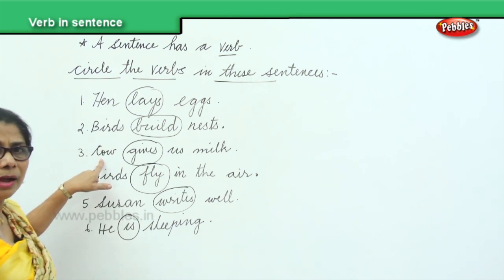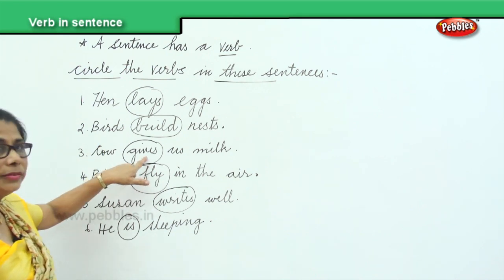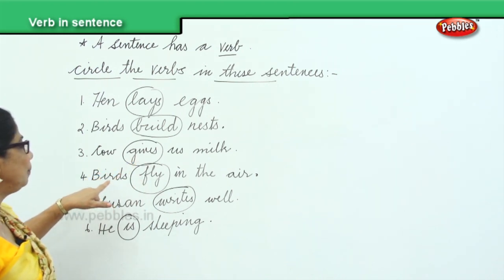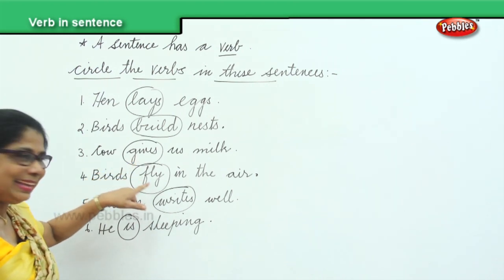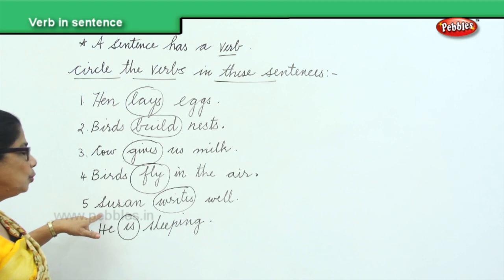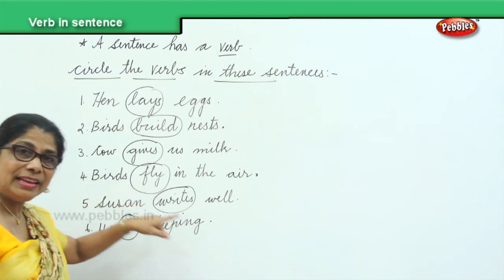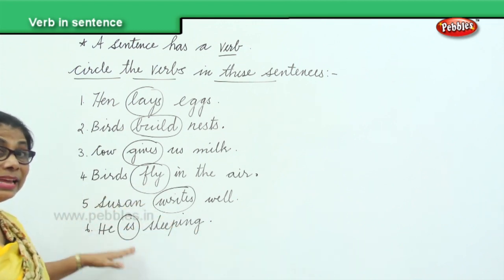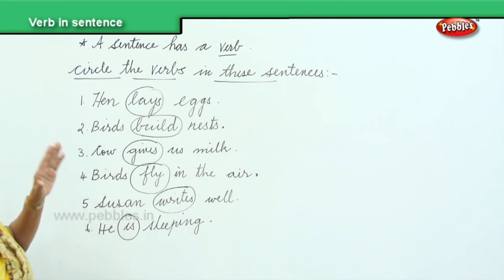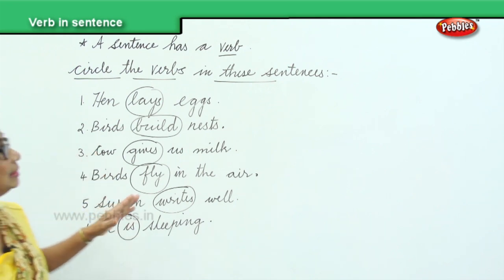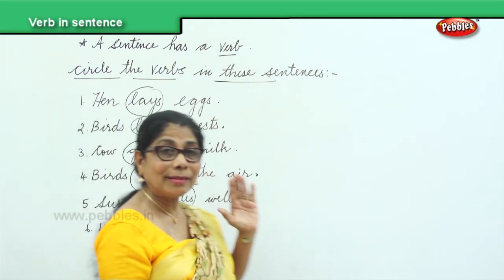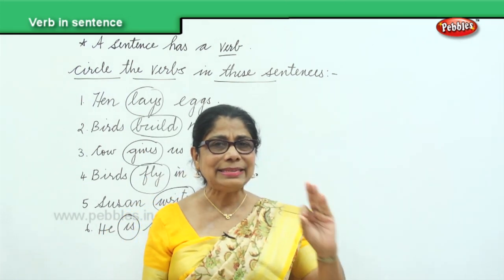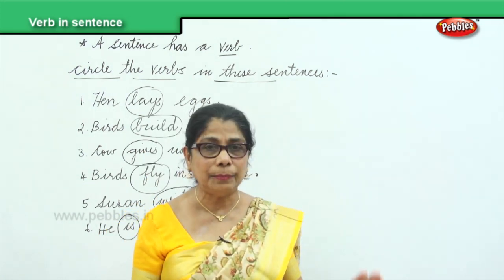Cow — what does the cow do? Cow gives us milk — so you get the verb 'gives.' Birds — what do the birds do? Fly. Susan — what is she doing? She writes. What is he doing? He is sleeping. We are trying to remember: a sentence has a verb.